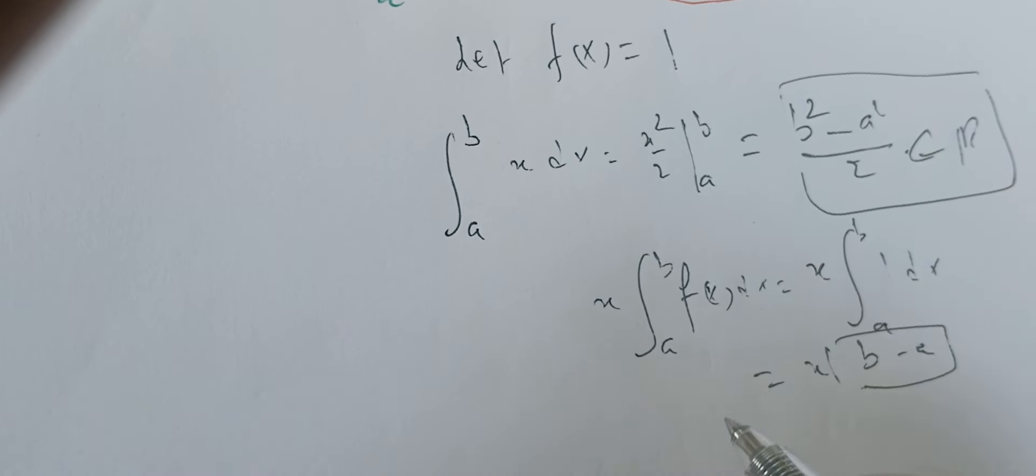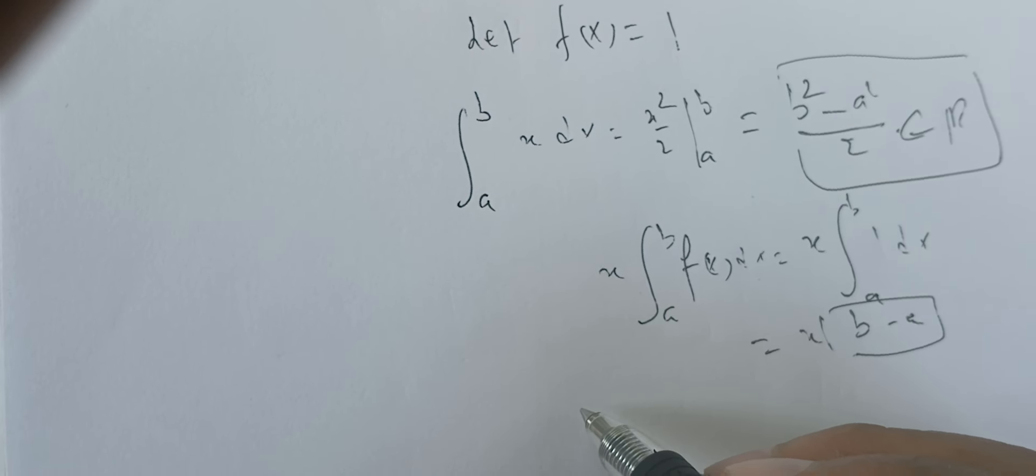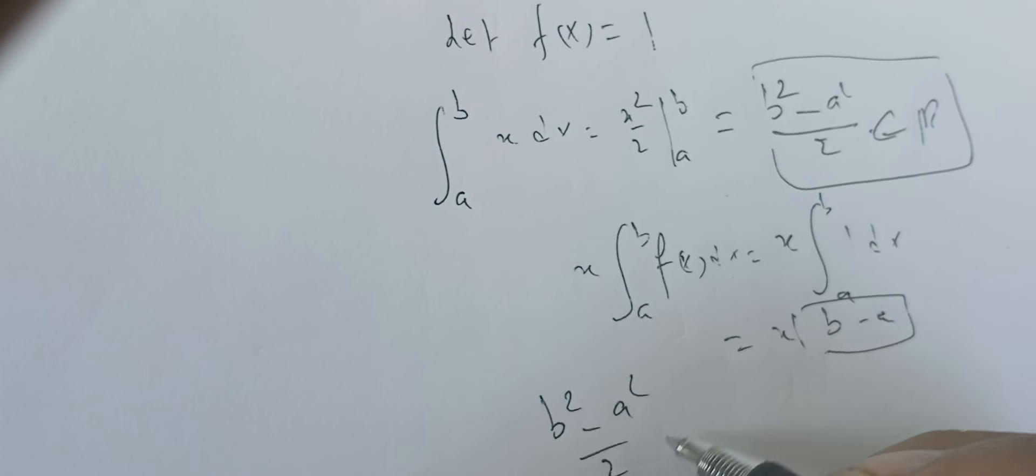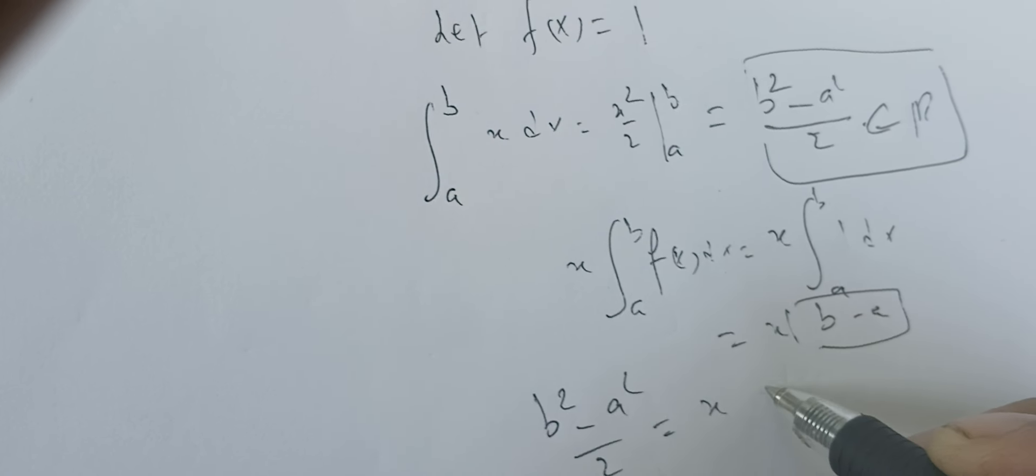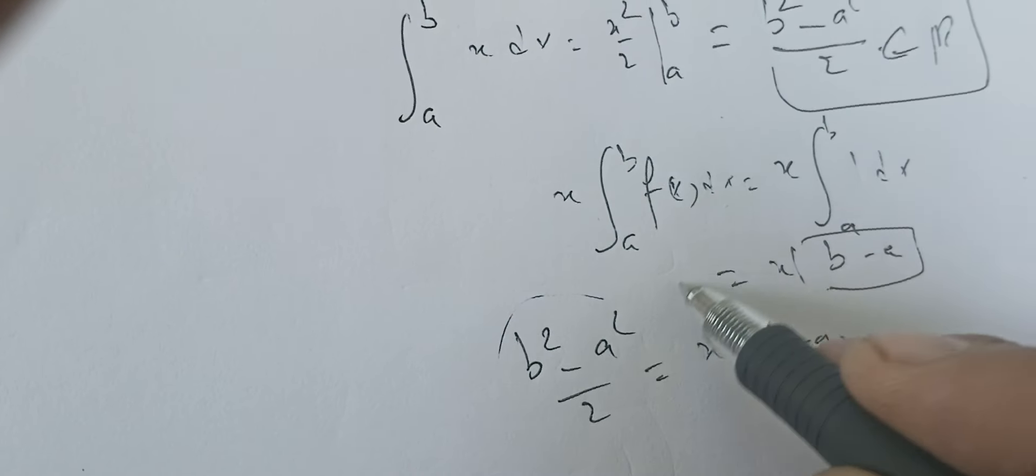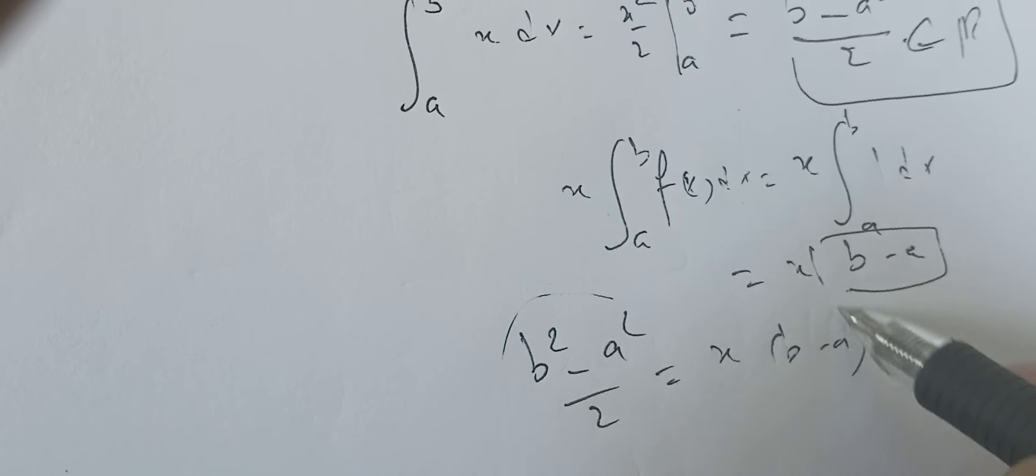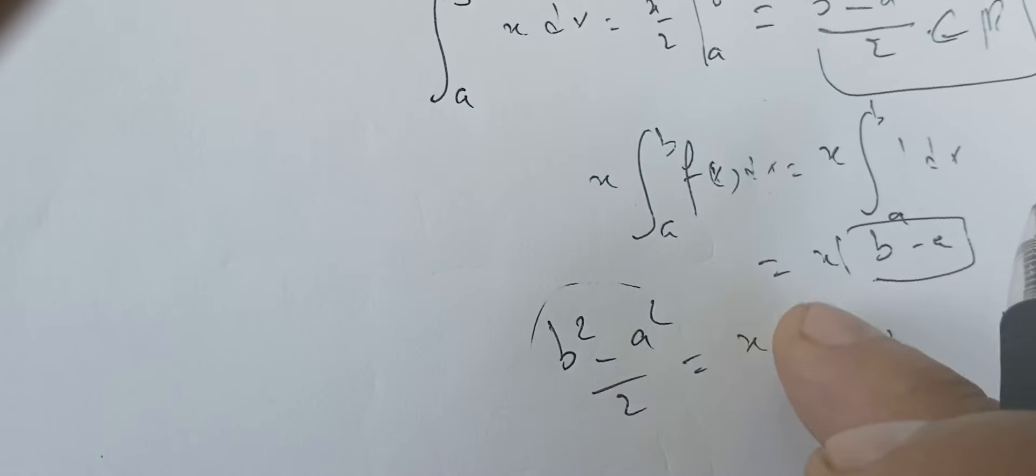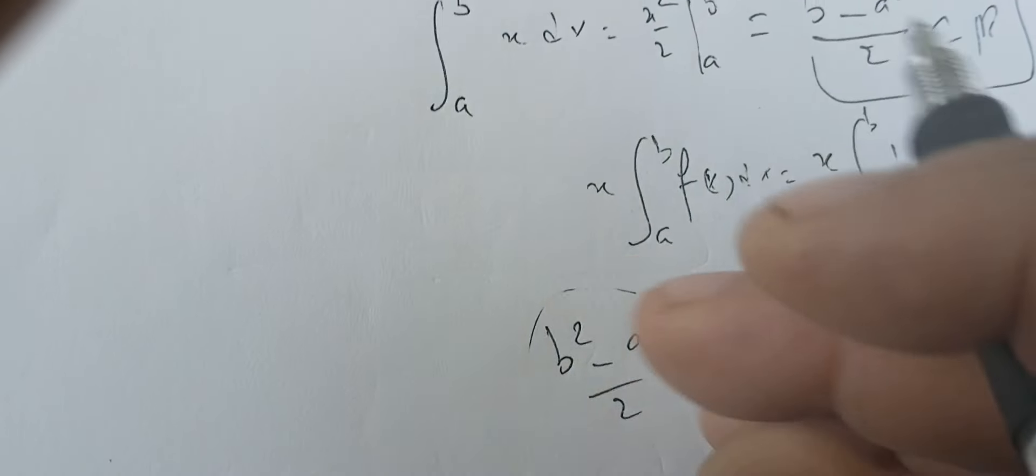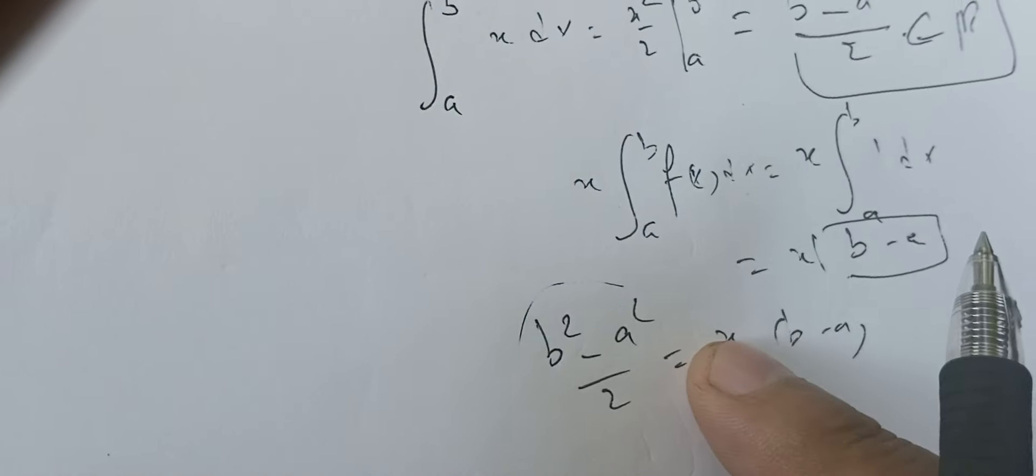Note here that we have b squared minus a squared over 2 equals x(b minus a). So this is a number equal to some polynomial, at least if we can call x a polynomial of degree one. Is that true for all x? No.